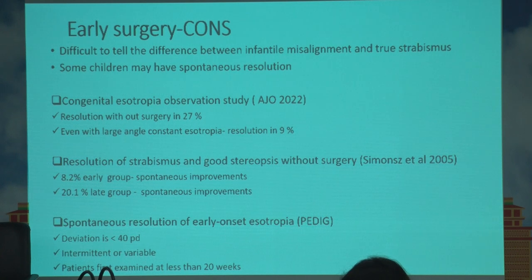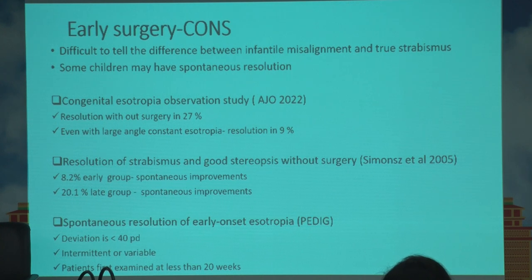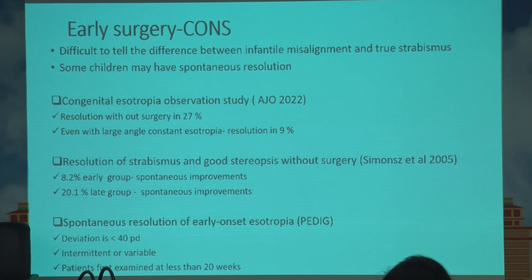However, the cons of early surgery include the difficulty in knowing whether it is actually an infantile misalignment or just a temporary misalignment that may spontaneously resolve, rather than a true strabismus. Some children have shown spontaneous resolution, especially with smaller angles, as shown in the Congenital Esotropia Observation Study and some PEDIG group studies, which showed that deviations less than 30 diopters, around 20 diopters or milder, may spontaneously resolve, especially if the patient is examined very early in life at around six weeks of age.